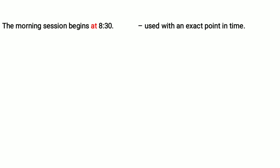Let's focus on prepositions of time. Take this sentence: 'The morning session begins at 8:30.' Here the preposition, given in red, is 'at.' The preposition 'at' is used to denote an exact point in time. So if you want to denote an exact point in time, we use the preposition 'at.'